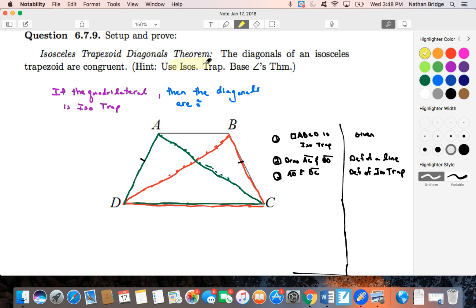we know that the base angles of an isosceles trapezoid are congruent. That is, this angle right here, which belongs to A, D, C, is congruent to this angle here, which belongs to B, C, D.